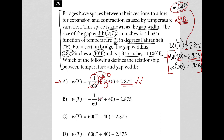For choice B, replacing T with 40 gives 80, and multiplying by negative 1/60 then subtracting 2.875 — that's a positive 80 times a negative, giving a negative result, minus 2.875, which is still negative. I need a positive 2.875, so that's another reason why B is incorrect.